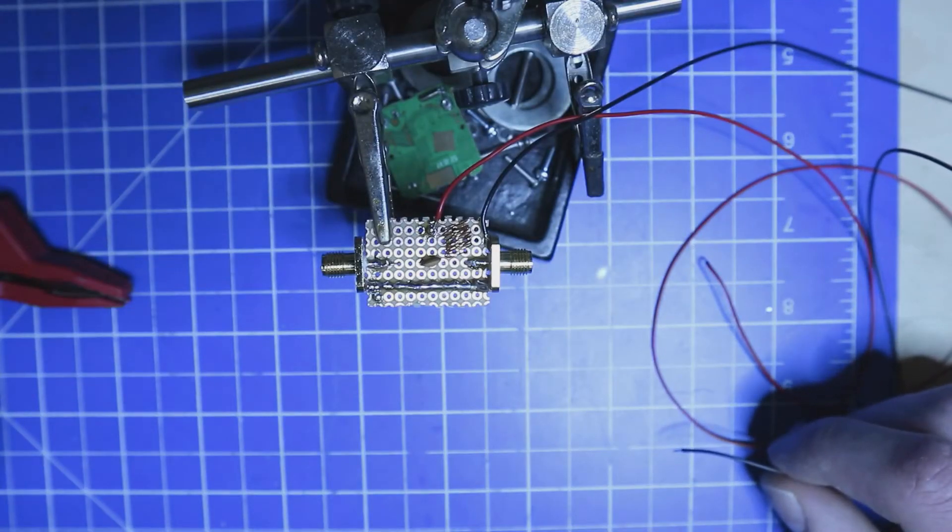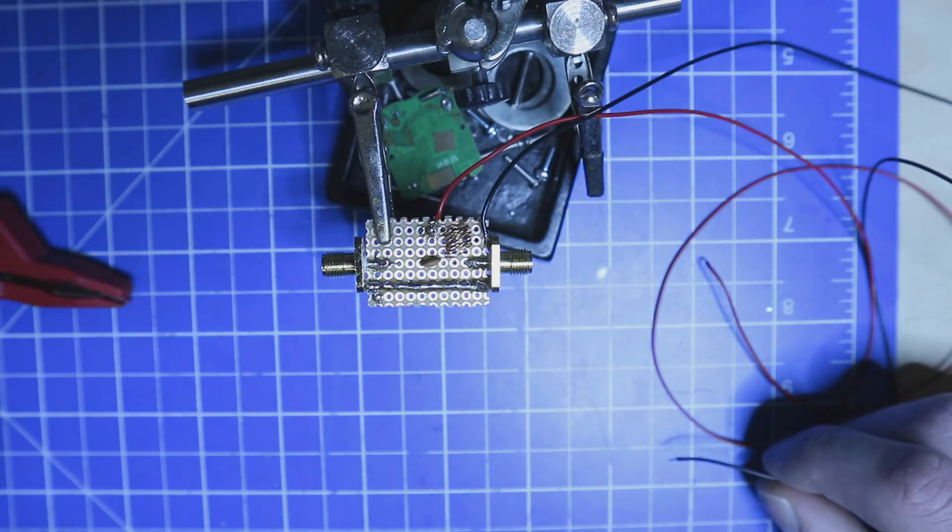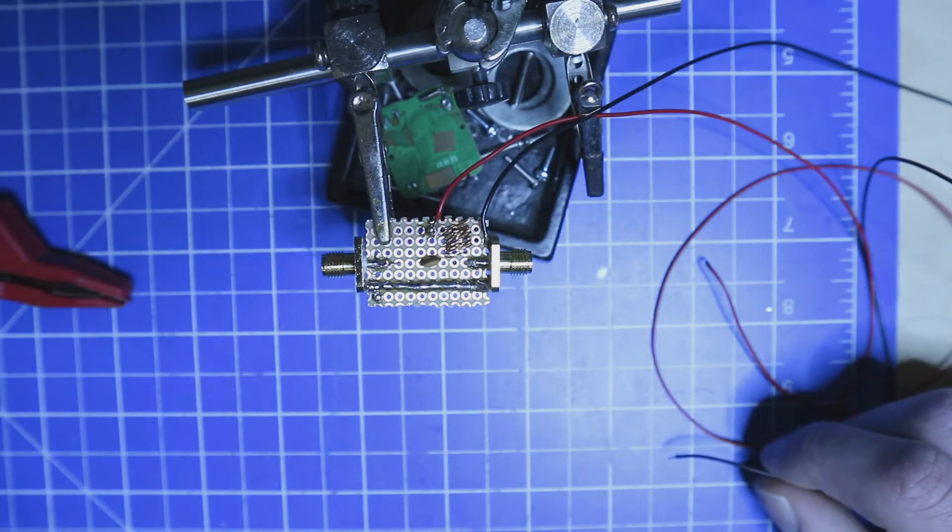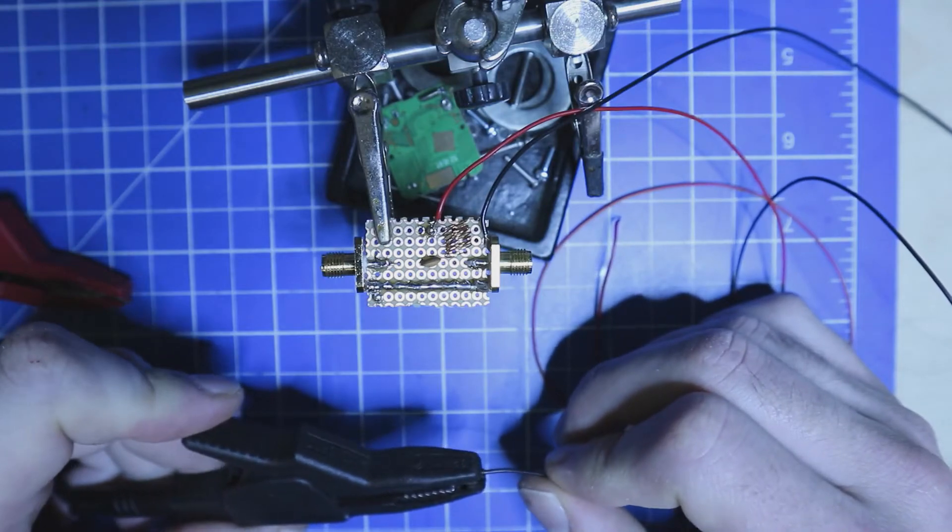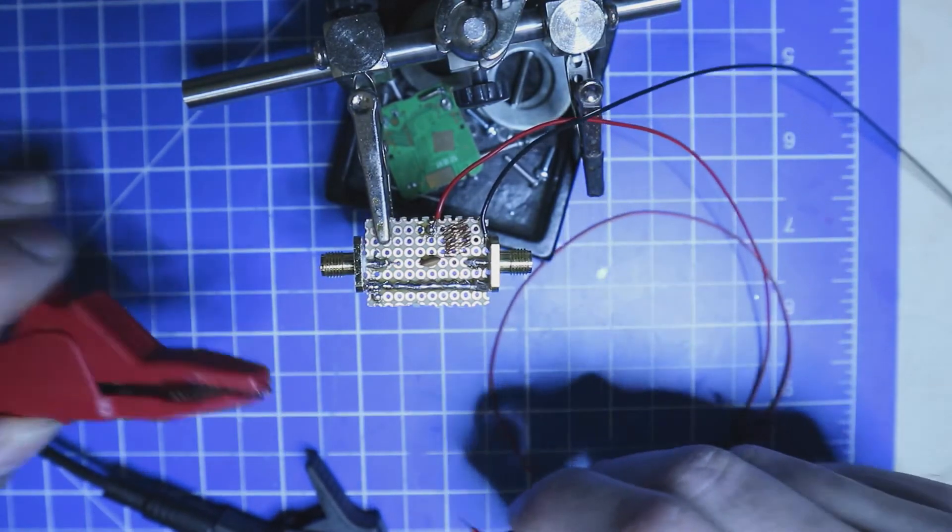Now the last thing we're going to do, since we have everything soldered, is to test the BIAS-T. Therefore, we're going to apply a DC voltage onto our connectors.